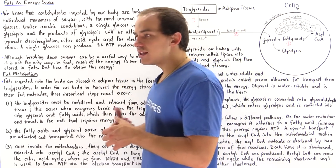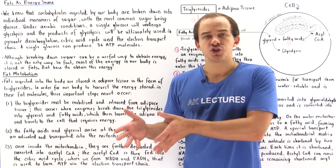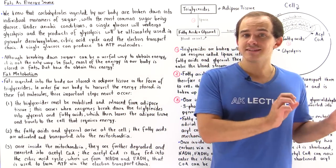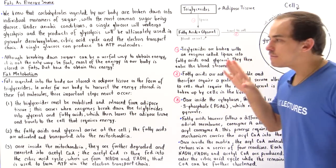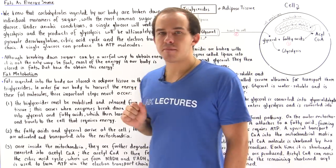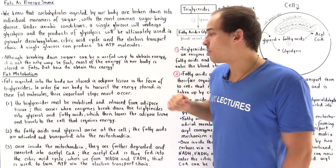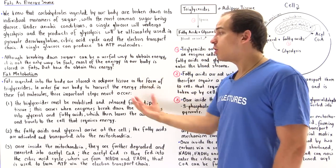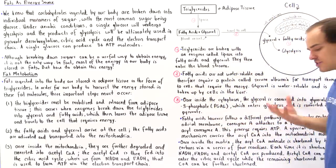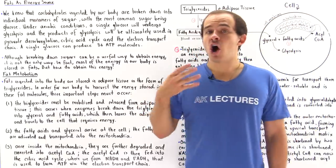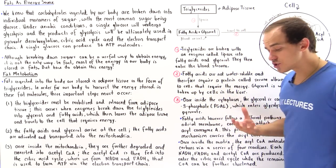In the same analogous way that we store glucose in the form of glycogen, we store our fatty acids in the form of triglycerides. Fats ingested into the body are stored in a specialized type of tissue known as adipose tissue, stored in the form of triglycerides. The question is: how exactly do we harvest the energy stored in triglycerides?